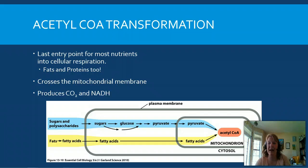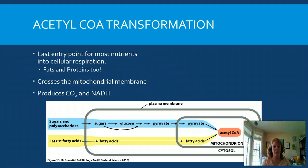When we last left off our food molecules, they were being broken into two pyruvate molecules from glycolysis. These pyruvate molecules don't go straight into the citric acid cycle. Instead, they have to undergo a process known as acetyl-CoA transformation.